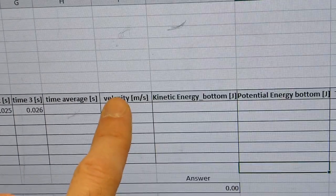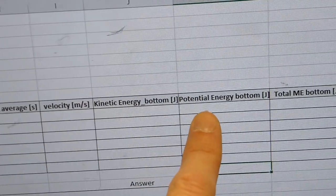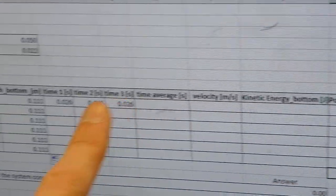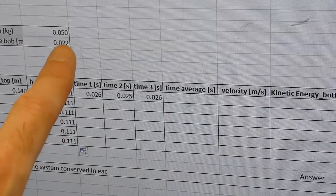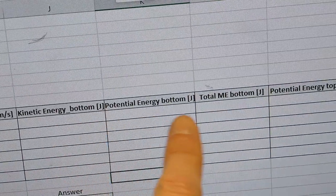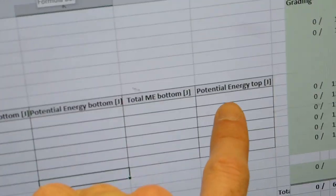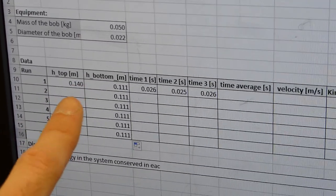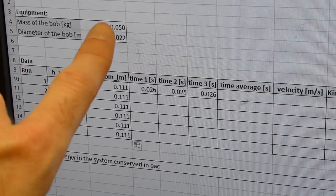Based on that speed you are going to calculate the kinetic energy of the bottom. The potential energy of the bottom you are calculating based on the lowest height and the mass of the bob. Then you add those two up to get the total mechanical energy at the bottom. And the potential energy at the top, you are calculating this one based on your height at the highest point and the mass of the bob.